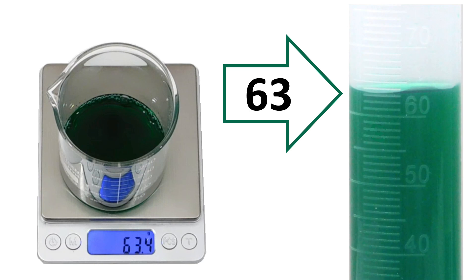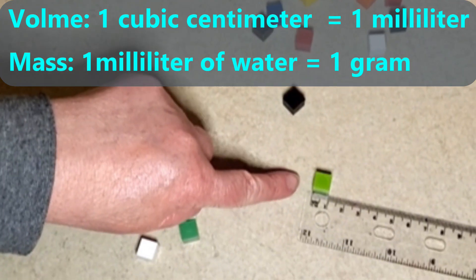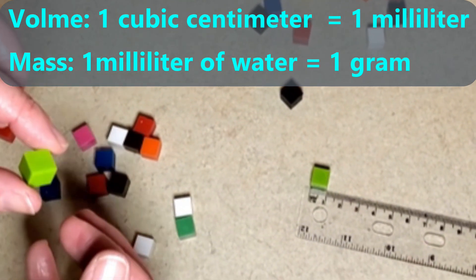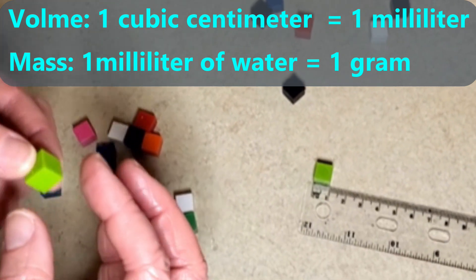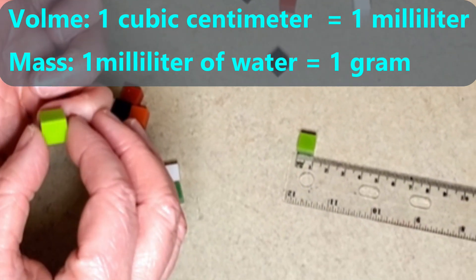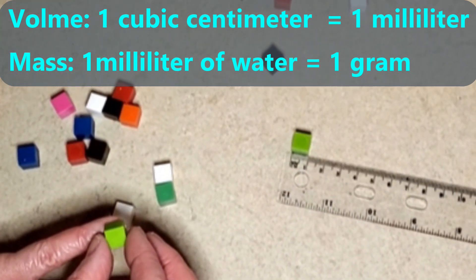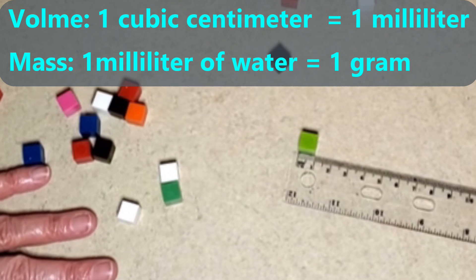The metric system was designed to make things easy when working with water, since we use water a lot. For water, one gram of mass is equal to one milliliter of volume. This solution is almost all water, so its mass in grams is almost equal to its volume in milliliters. This cube is one centimeter on each side, so sometimes we call it a cubic centimeter. It has the same volume as one milliliter. If it was made of water, then its mass would be one gram. You can remember this size because one side is about the size of a small fingernail.